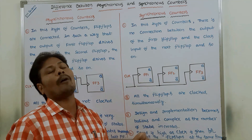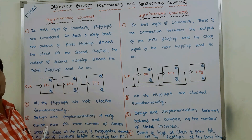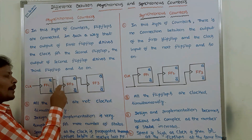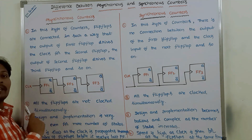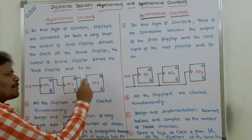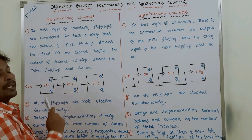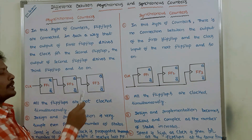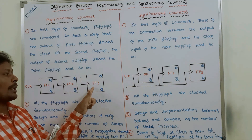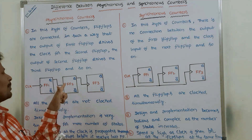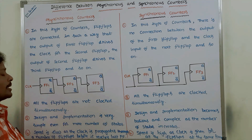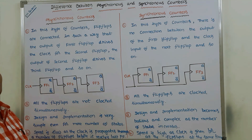Because of the simultaneous clocking in synchronous counters, speed is high. In asynchronous counters, the clock pulse is not given to all flip-flops at the same time — each flip-flop gets its clock from the output of the previous one. This dependency chain means propagation delay is more, and speed is slow in asynchronous counters.